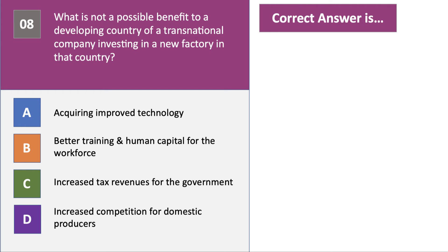Question eight: what is NOT a possible benefit to a developing country of a transnational company investing in a new factory in that country? The right answer is D — increased competition. A TNC investing in the country should in theory improve the stock and quality of technology, train workers and improve human capital, and increase tax revenues. However, there is a risk that the TNC could crowd out smaller domestic producers by increasing competition in the market.